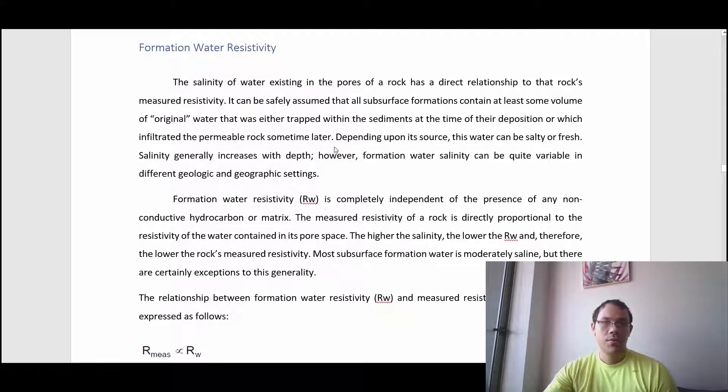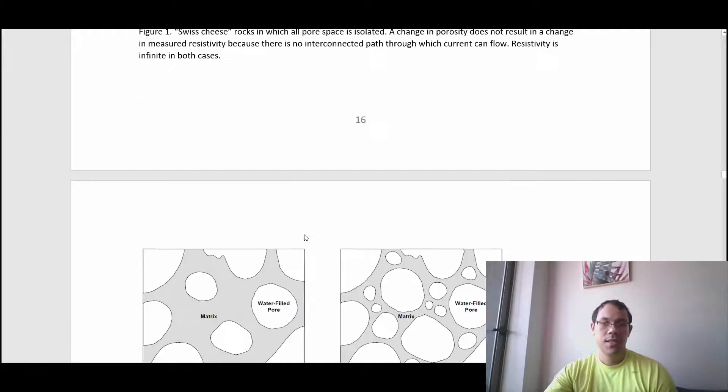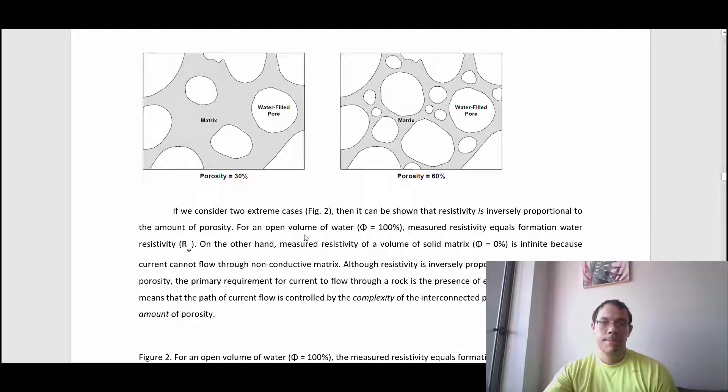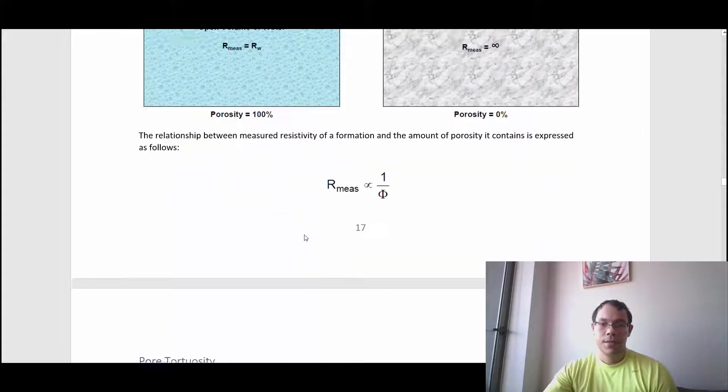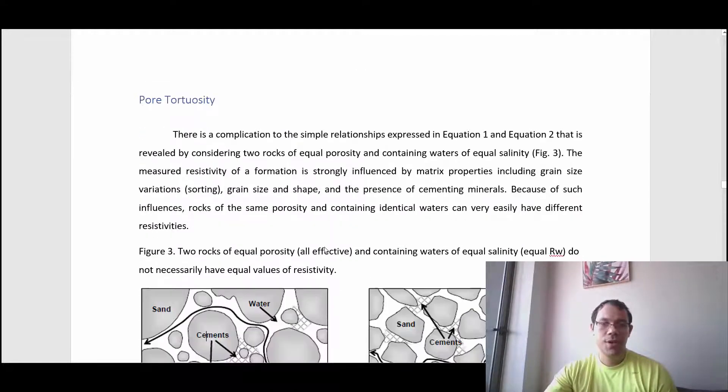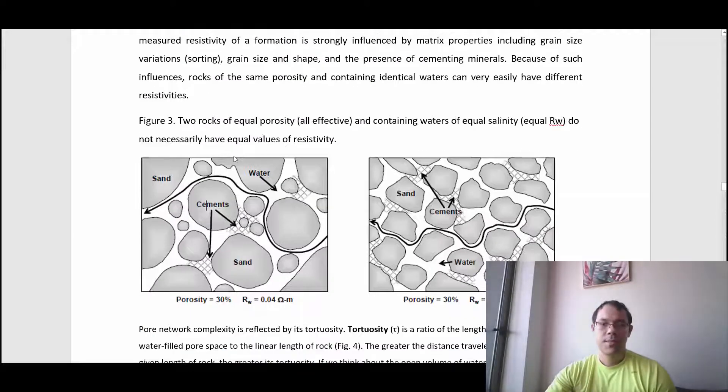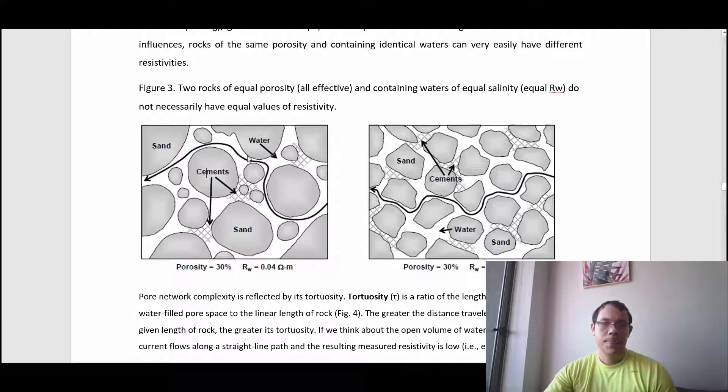Here's a summary about the effects of formation water resistivity and porosity. Basically, all those elements are joined in the Archie equation. Let's talk about tortuosity. This is a technical concept, but basically what you see on this graph is the path that current must follow through the formation.